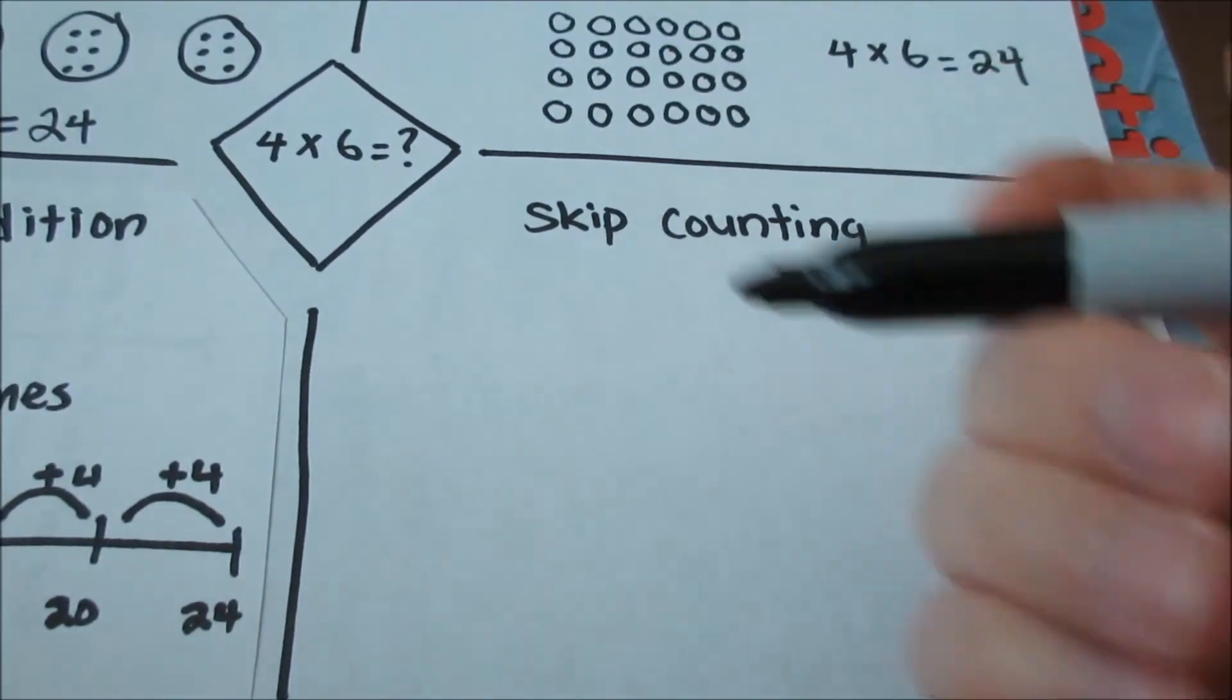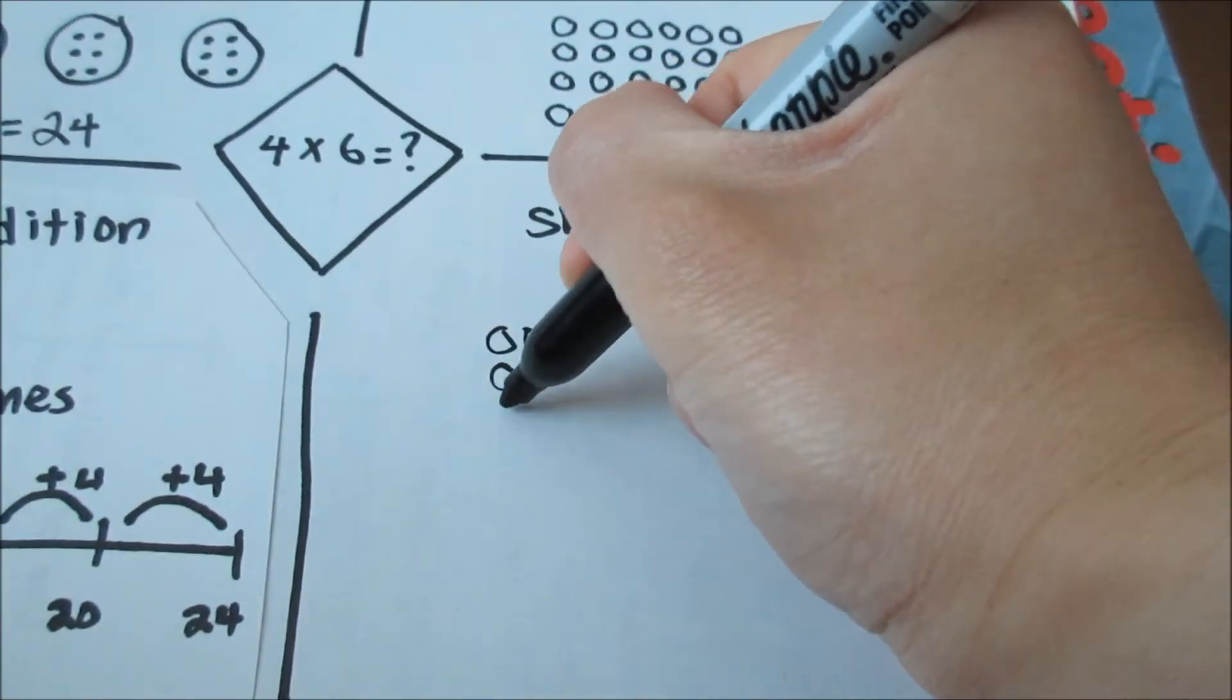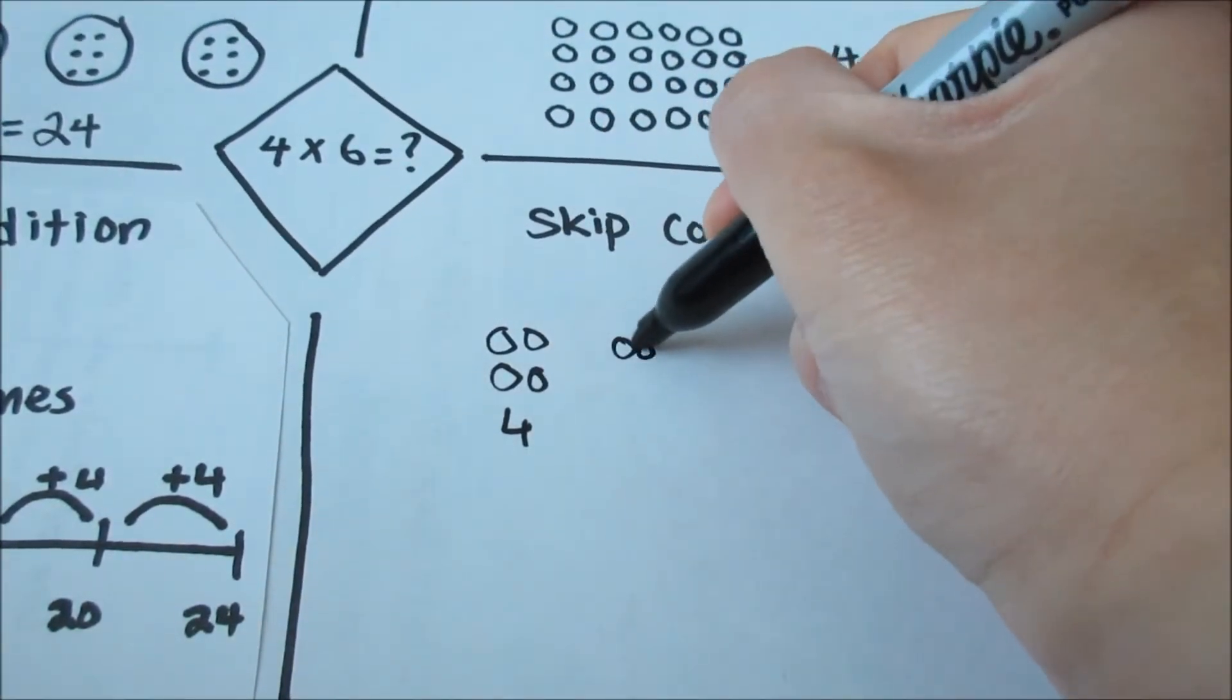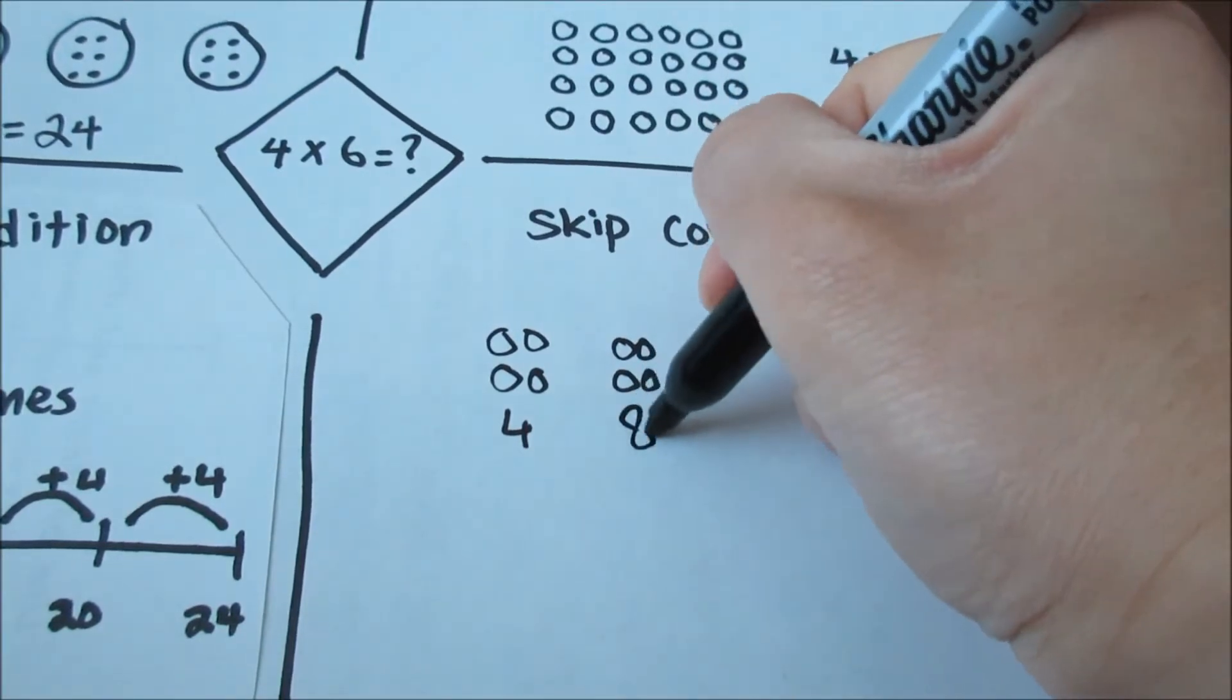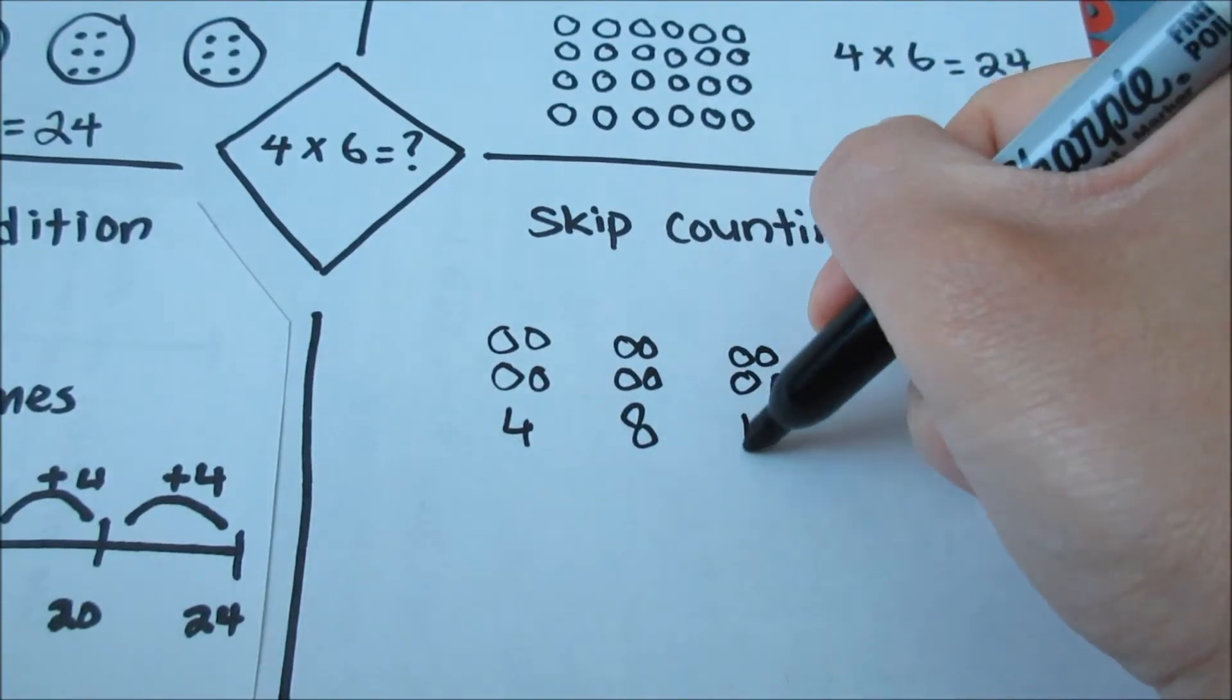Now let's look at skip counting. It's not a great strategy because you kind of have to already know what to do. So for skip counting, you are skip counting by 4 each time. You count 4, 8, 12,